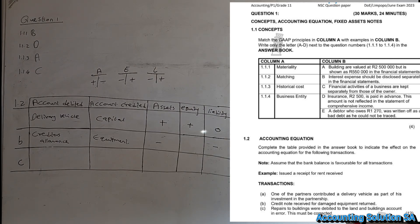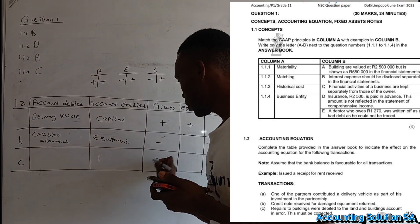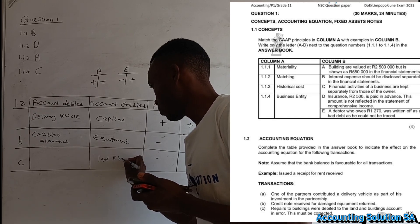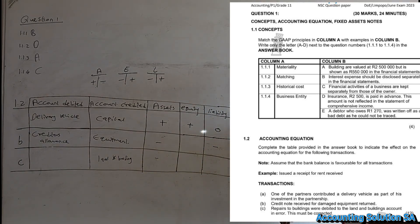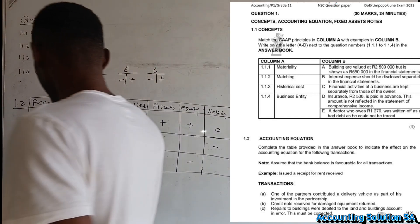Transaction C: Repairs to the building were debited to the land and building account in error — this must be corrected. Repairs is an expense and must not be included in the cost price of land and building. So we are going to reduce land and building — subtract it from assets. Then we record it as an expense, which means equity decreases: equity equals expenses, which is a minus for repairs.